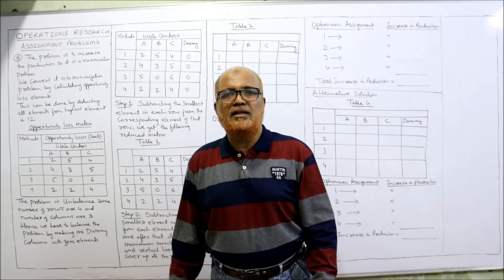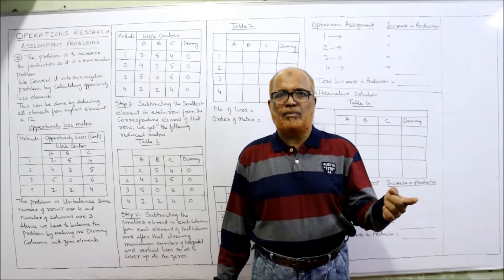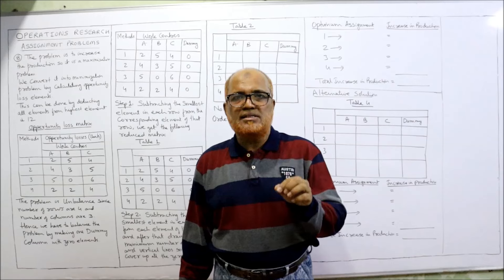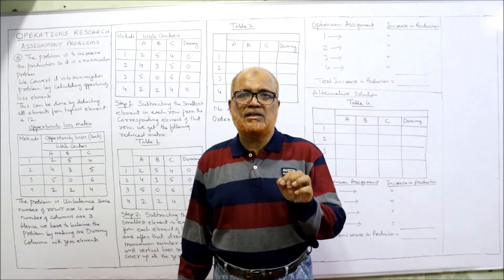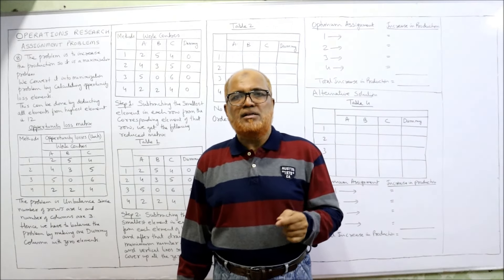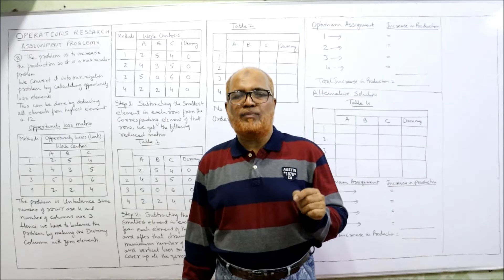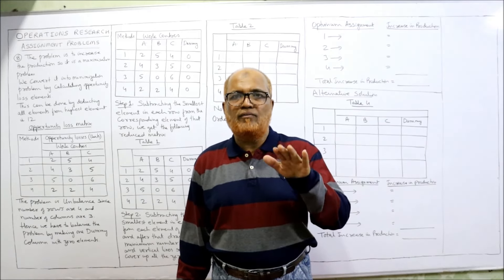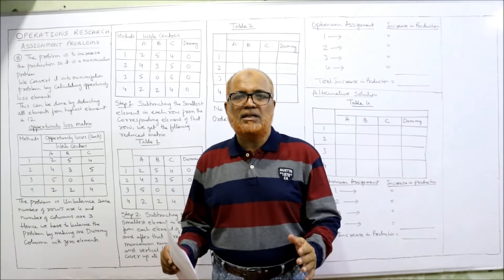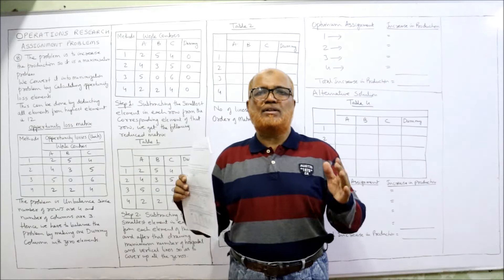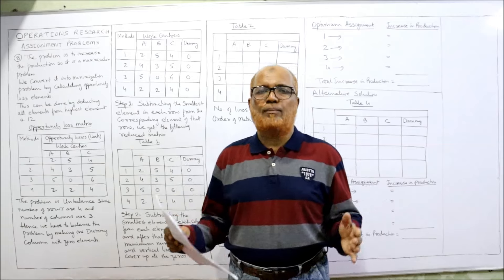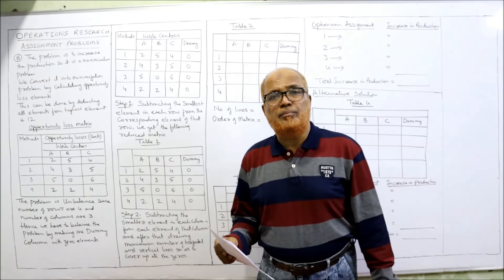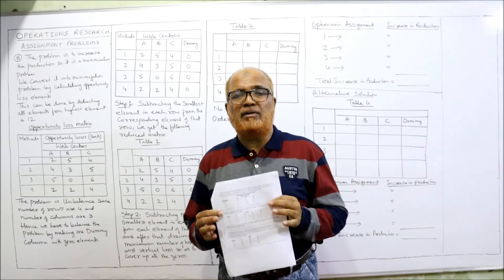In this video, it will not be specified in the problem whether it is maximization or minimization — we have to identify it. For example, if production, sales, or profit is given, we have to maximize. If cost, distance, or time is given, we have to minimize. In that way we can understand whether the problem is of maximization or minimization type.